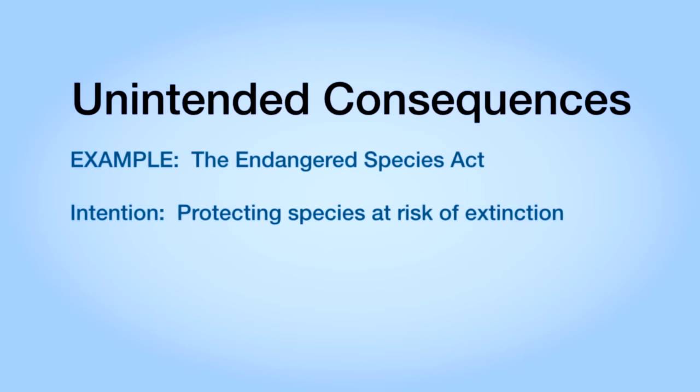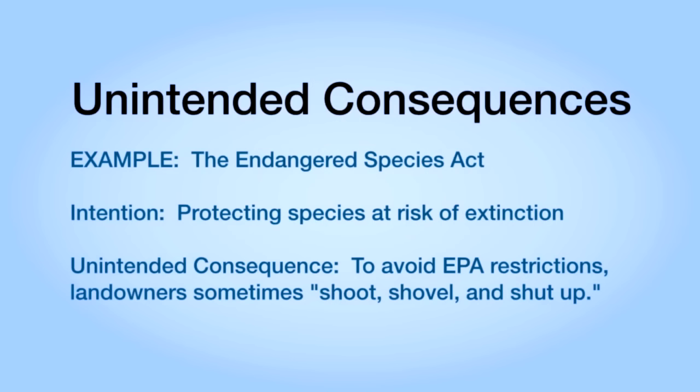The intention of the Endangered Species Act is to enable endangered species to flourish. One consequence in many cases is to cause the endangered species to be killed off more quickly than otherwise. If you're a landowner and you find an endangered species on your property, you know that the Environmental Protection Agency will, as a result of that finding, impose restrictions on your land. One consequence of those restrictions is it reduces the value of your land — what you can do with it, the price you can sell it for. So what a lot of landowners do when they find what they think to be an endangered species on their property is they kill the species and shut up about it. It's called shoot, shovel, and shut up: kill the species, shovel to bury it, and say nothing about it. Clearly that's not the goal of the Endangered Species Act.